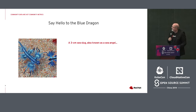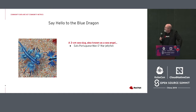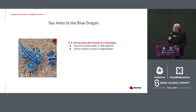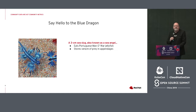The blue dragon is a three centimeter long sea slug, also known as a sea angel, and it eats Portuguese man-of-war jellyfish. So it's very beautiful, lovely to look at. But because it eats poisonous jellyfish, it can basically kill you with the little things at the end of its appendages. So this is one example of something in nature that is very beautiful to look at, but don't touch it or you might die.